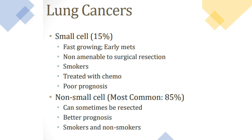Lung cancer is classified morphologically and clinically into small cell carcinoma and non-small cell carcinoma. Small cell carcinoma appears as very small dark blue cells under the microscope. It is a fast-growing tumor with early metastasis, so it cannot be treated surgically and is treated by chemotherapy. Small cell carcinoma is found only in smokers, unlike non-small cell carcinoma which is found in both smokers and non-smokers.